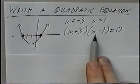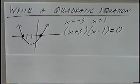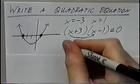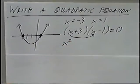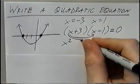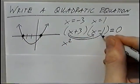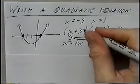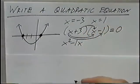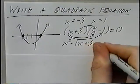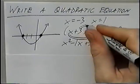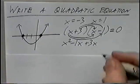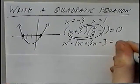Simplifying this, we can multiply or FOIL the two parentheses. FOILing the first terms, x times x would be x squared. Multiplying the outside terms, x times negative 1 would be negative 1x. Multiplying the inside terms, 3 times x would be 3x. Multiplying the last two terms, 3 times negative 1 would be negative 3 equals 0.